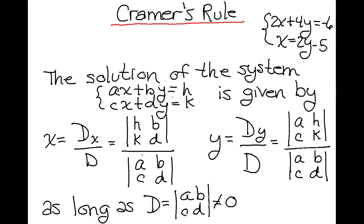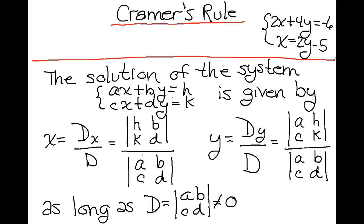So let's first take a look at Cramer's Rule. Cramer's Rule gives the solution of a system that consists of two equations: ax plus by equals h, and cx plus dy equals k, and the solution is given by the following.